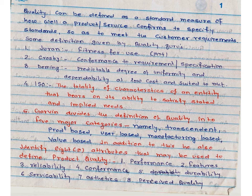The last attribute is perceived quality, which is essentially the reputation of a particular company. For example, Apple is popularly known for mobile phones, Sony for TVs, and Toyota for cars. So whenever a customer wishes to procure a particular product, they also look at the perceived quality or reputation of the organization.